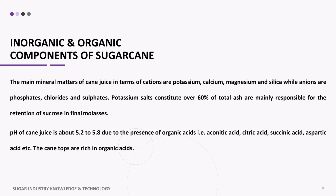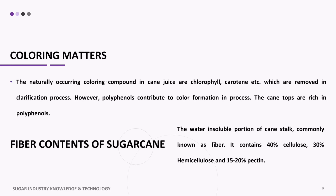The organic acids present include aconitic acid, citric acid, succinic acid, aspartic acid, etc. The cane tops are rich in organic acids. Naturally occurring coloring compounds in cane juice include chlorophyll and carotene, which are removed in the clarification process. However, polyphenols contribute to color formation in process, and cane tops are rich in polyphenols.